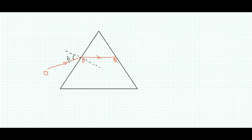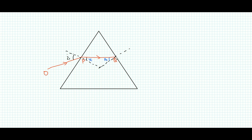Here i1 is the angle of incidence and r1 is the angle of refraction. Again, on the second surface, when the ray emerges out of the prism, refraction happens from denser medium to rarer medium. I draw the normal here, and for this surface, r2 is the angle of incidence. When the ray emerges out of the prism it bends away from the normal. This emergent ray QR makes emergent angle i2.